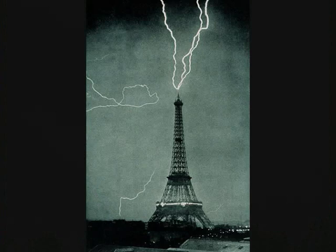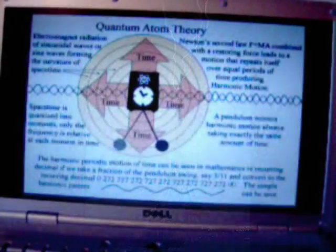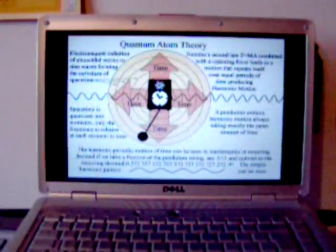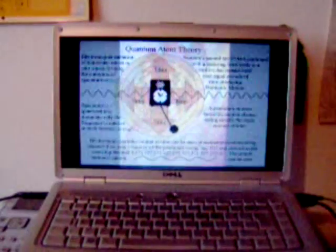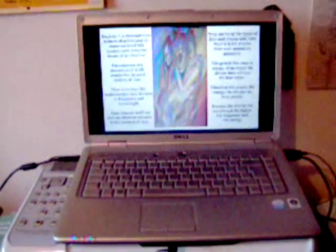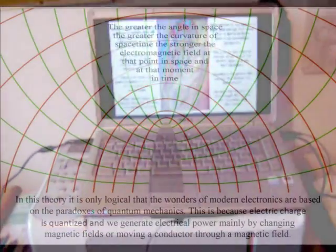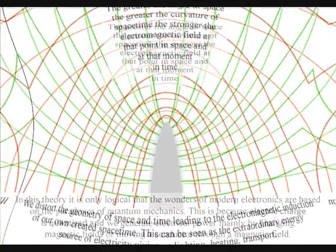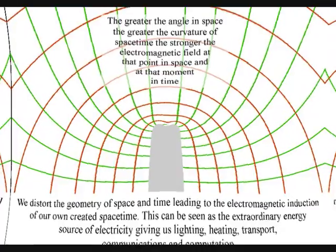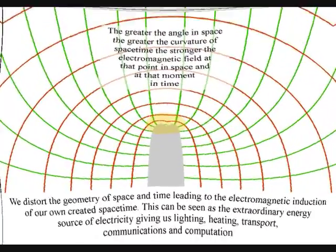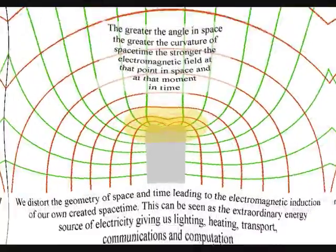In this theory, it is only logical that the wonders of modern electronics are based on the paradoxes of quantum mechanics. This is because electric charge is quantized, and we generate electric power mainly by changing magnetic fields or moving a conductor through a magnetic field. This will distort the geometry of space and time, leading to the electromagnetic induction of our own created space-time.